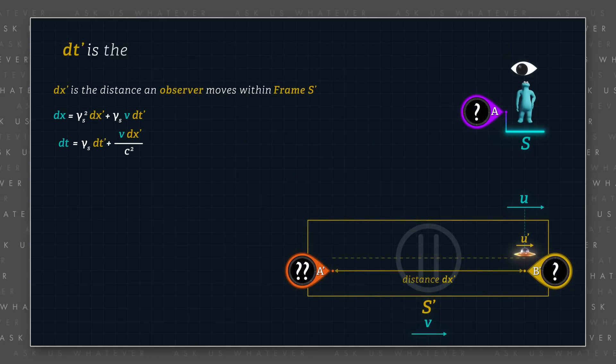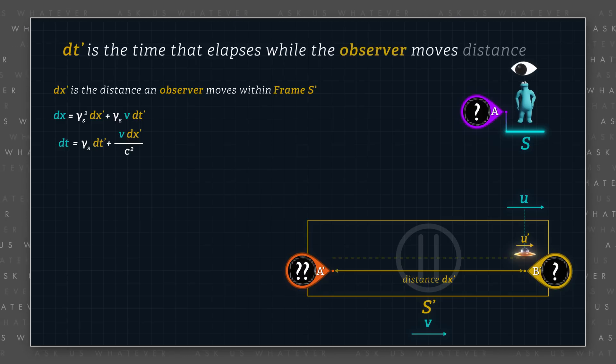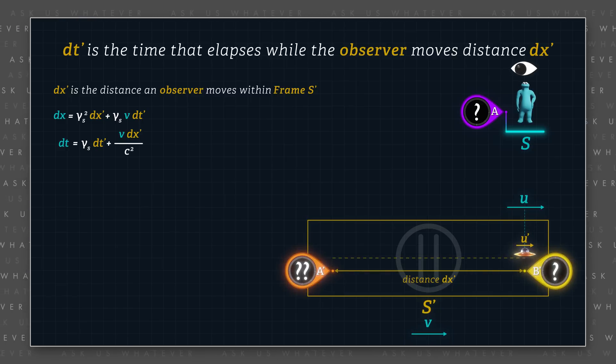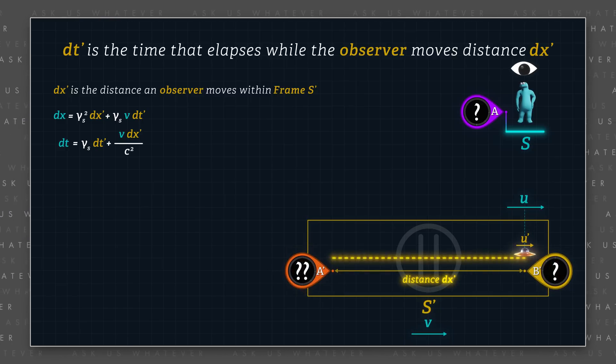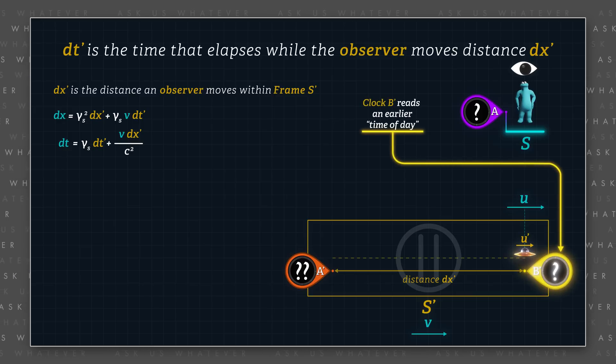Dt prime is the time that elapses while the object or observer moves distance dx prime within frame s prime, as measured with two frame s prime clocks separated by that distance dx prime. Note that the two clocks in frame s prime are Einstein synchronized,